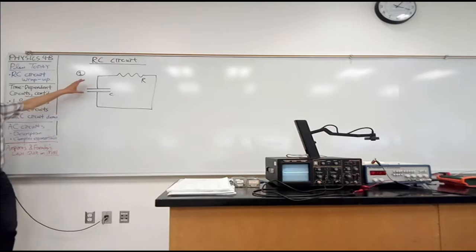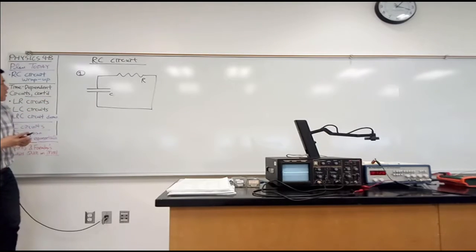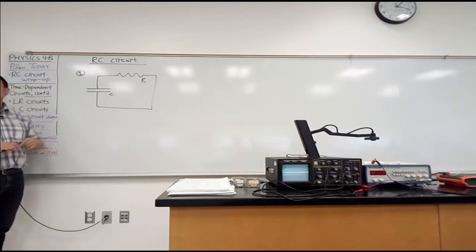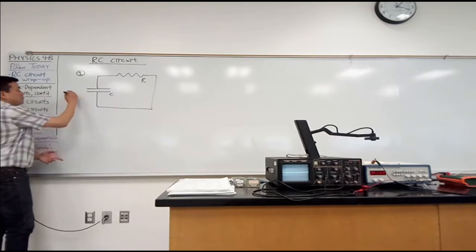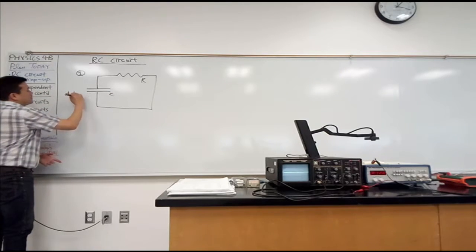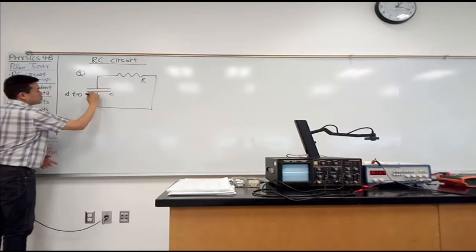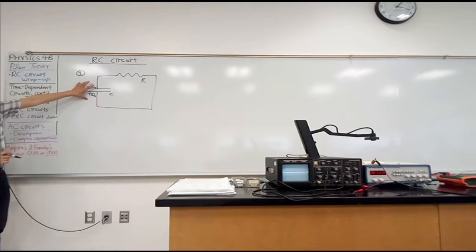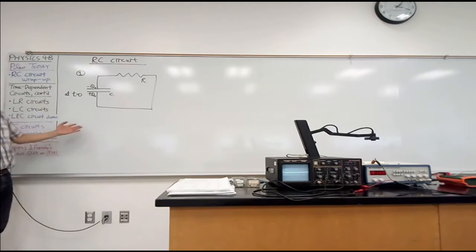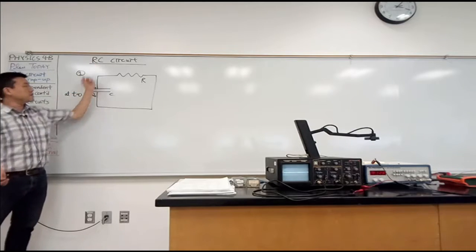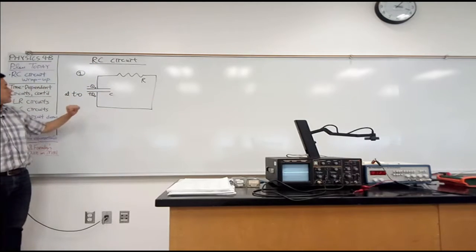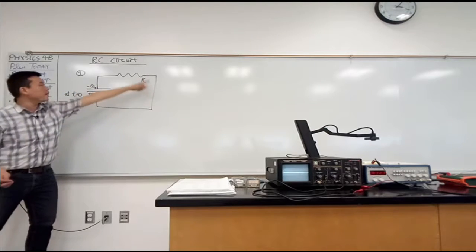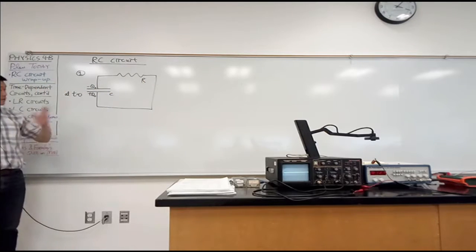So to get something interesting out of this, what you have to imagine is that you charged up this capacitor initially, so that you have to imagine that at time equals zero, you had some charge plus Q naught and minus Q naught on this capacitor, and that at some time you connected the circuit and then let current start to flow this way through the circuit.